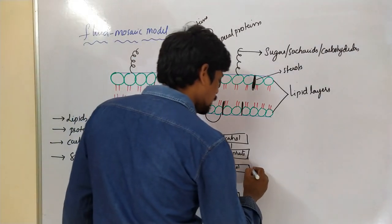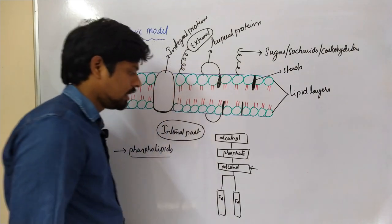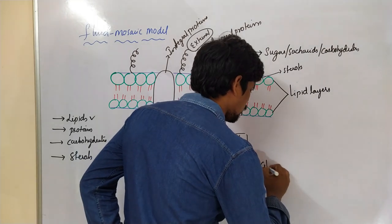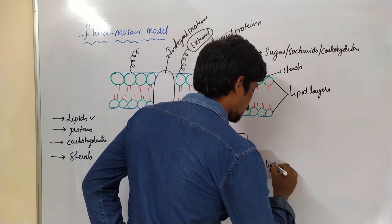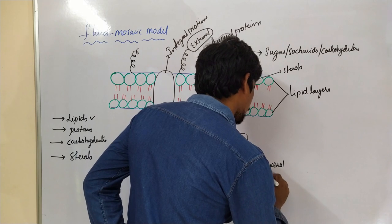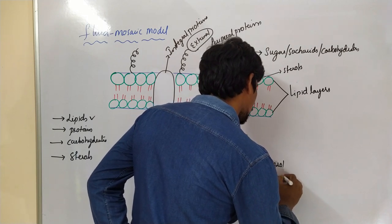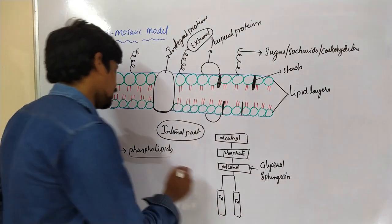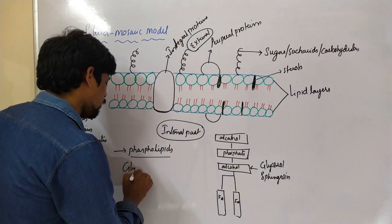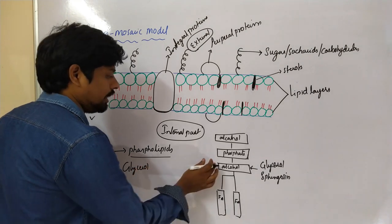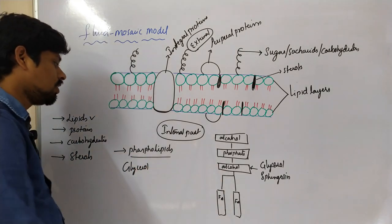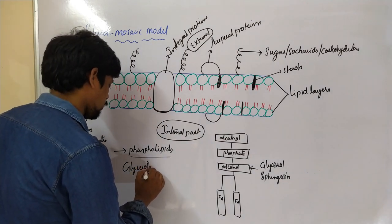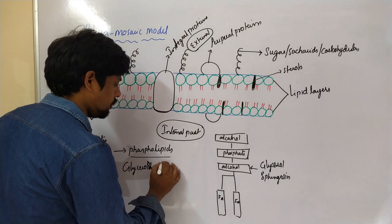The alcohol in phospholipids is of two types: glycerol and sphingosine. When glycerol is the alcohol, it is called a glycerophospholipid. Glycerophospholipids contain two fatty acids, one glycerol, and one phosphate.